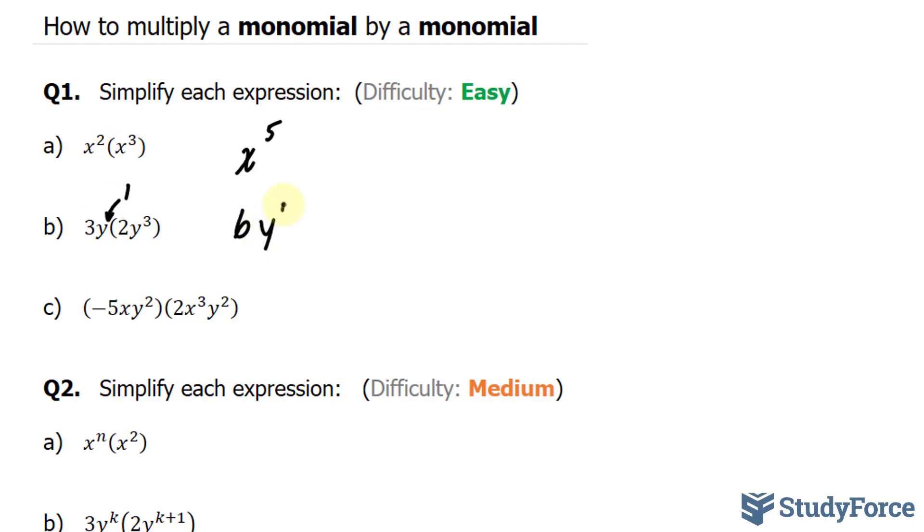In question C, we have negative 5xy to the power of 2. That's our first monomial. And our second monomial is right here. We'll start with the numbers, negative 5 times 2 is equal to negative 10. x times x to the power of 3 is x to the power of 4. And y to the power of 2 times y to the power of 2 is y to the power of 4 as well. That's the answer to question number 1.